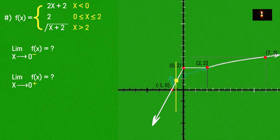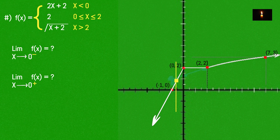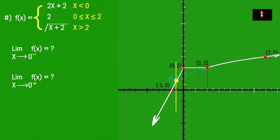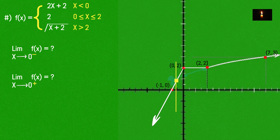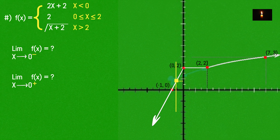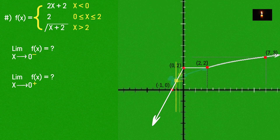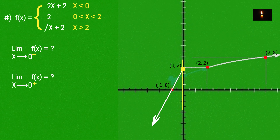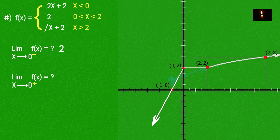Now we evaluate the limit: x tends to 0 from the left. So as x tends to 0 from the negative side — 0 minus — we are approaching from the left.